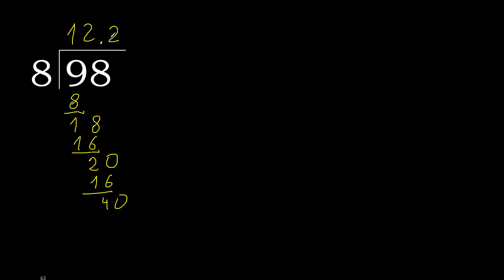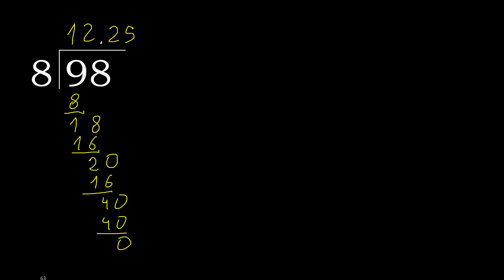40. 8 multiplied by 5 is 40. Subtract: 0. Remainder 0, therefore finish. 98 divided by 8 is complete.